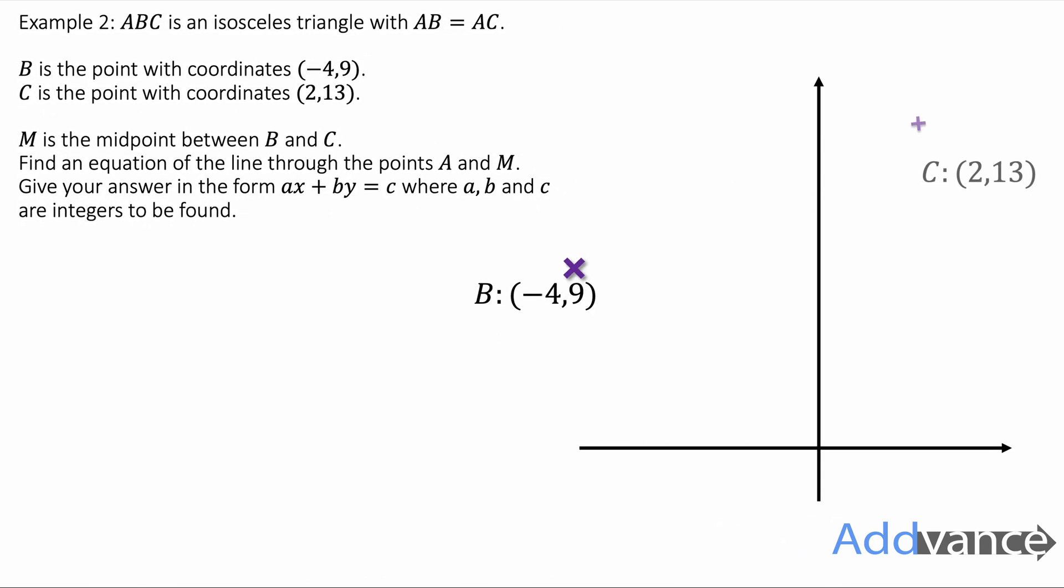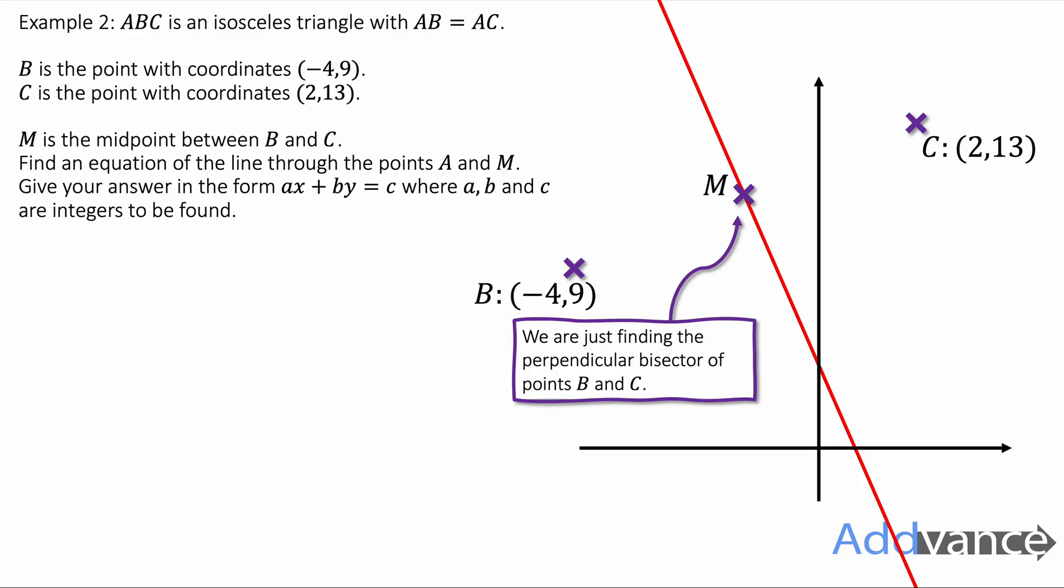So again we draw a sketch of what we're looking at here. We've got an isosceles triangle A, B and C. We don't know what A is but we know what B and C are. We've also got a midpoint between B and C. And we're interested in the line between A and M like this. Basically when we look at this we're just looking for the perpendicular bisector between B and C. I have a video on finding perpendicular bisectors on graphs and I will link that in the description below so you can watch that in more detail if you wish.